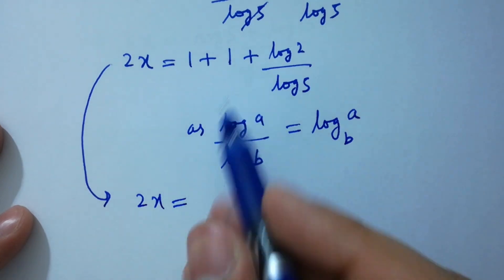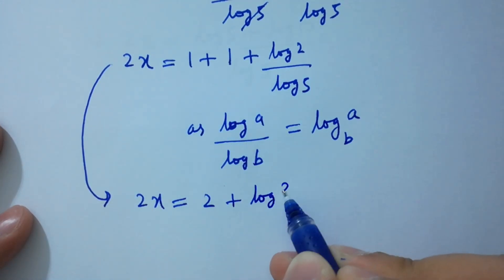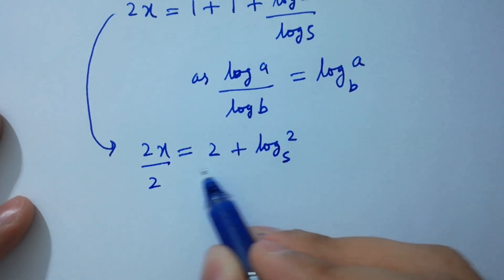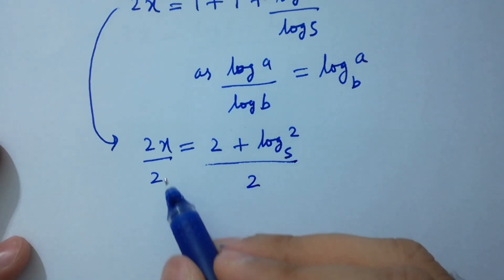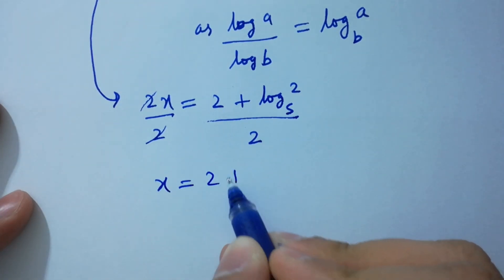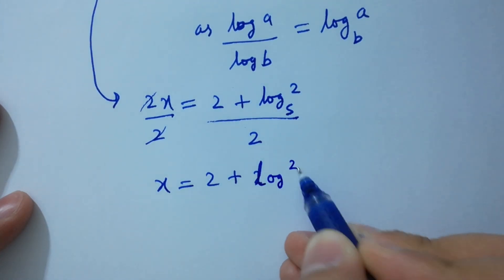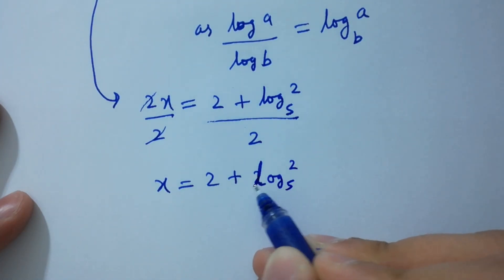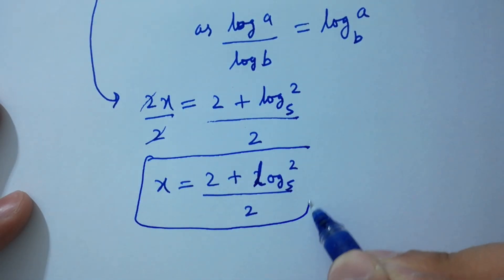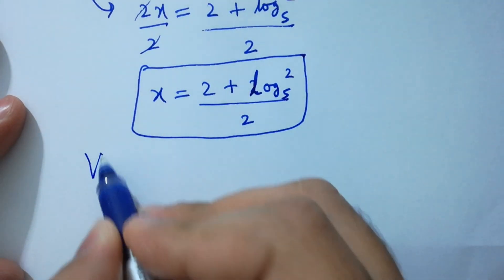Dividing both sides by 2, 2 and 2 cancel, giving x equal to 2 plus log 2 to the base 5, all over 2. This is the value of x. In the next step, I am going to verify.